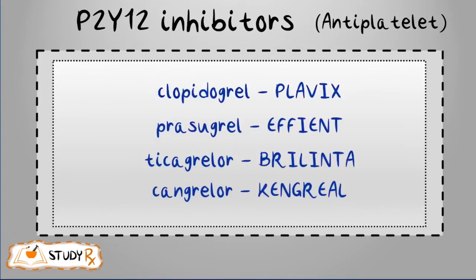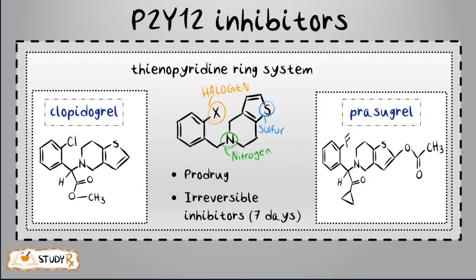The four medications for P2Y12 inhibitors are: clopidogrel (brand name Plavix), prasugrel (brand name Effient), ticagrelor (brand name Brilinta), and cangrelor (brand name Kengreal). These medications are antiplatelet medications.